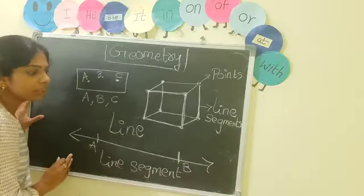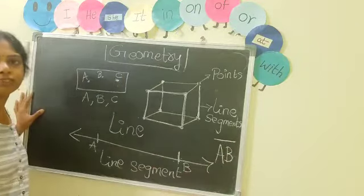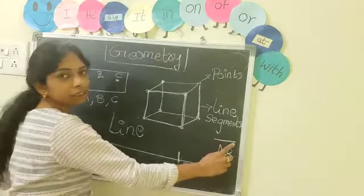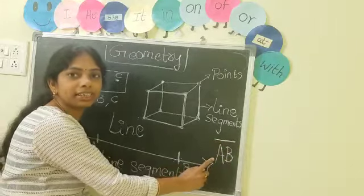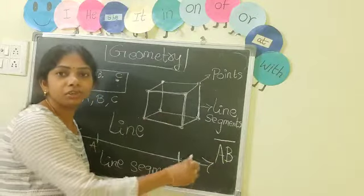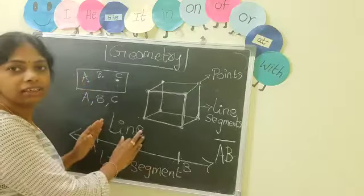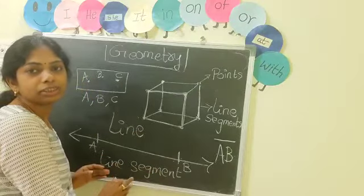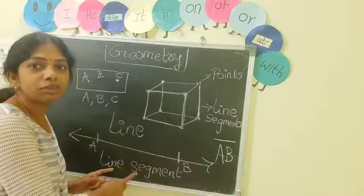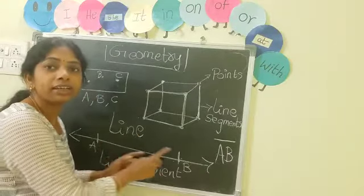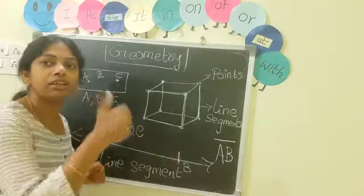How do we denote the line segment? A, B — line segment AB. We have to write a small horizontal bar on top of AB. So this is how we read line segment AB. To summarize: a line has no starting point and no ending point, but a line segment has one starting point and one ending point, and a line segment is a part of the line.